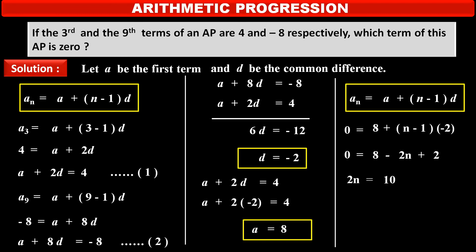Solving we get 2N is equal to 10. Therefore, dividing both the sides by 2, we get N is equal to 5. N is equal to 5. Means, 0 is the fifth term of this given AP.